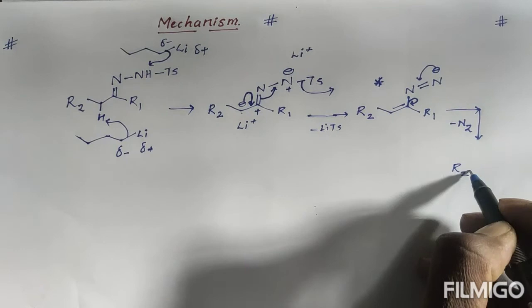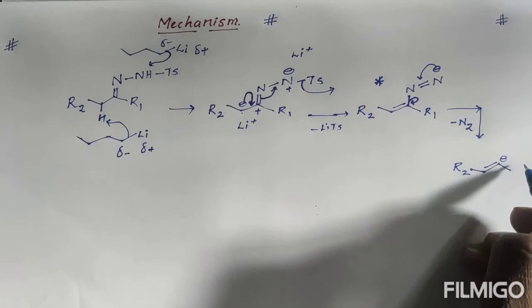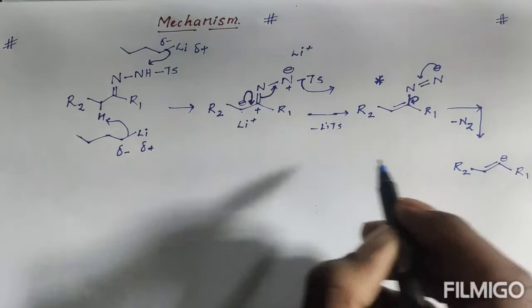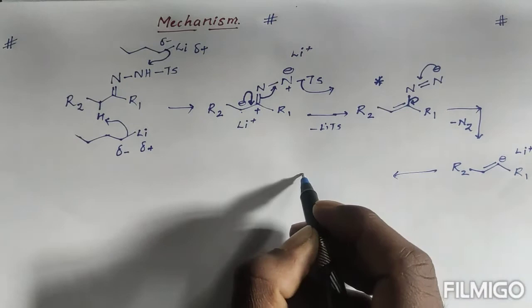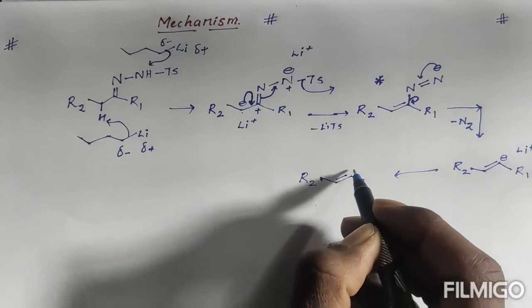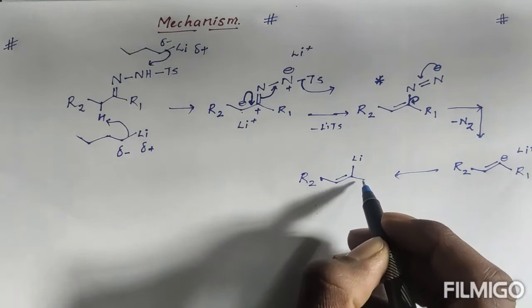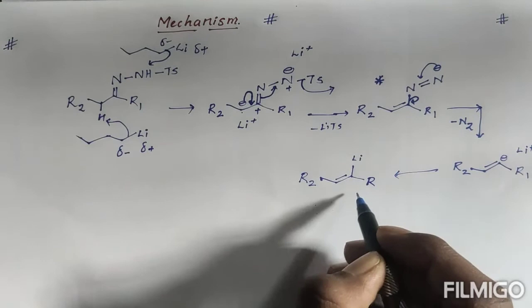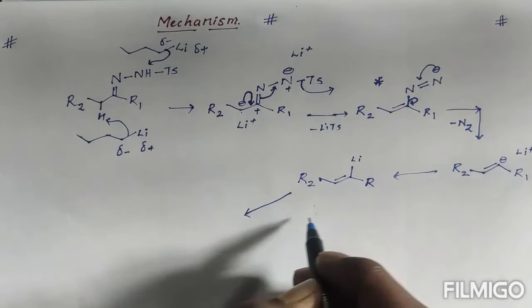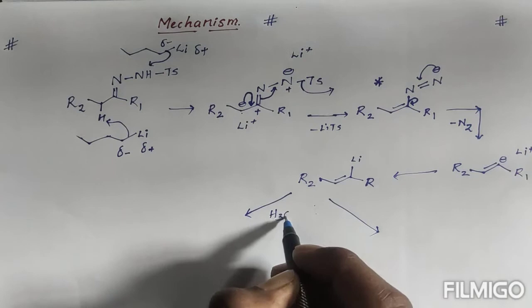So what we have here is a vinyl carbanion with R1, R2, and a negative charge on the terminal carbon. The second equivalent of lithium comes in. Lithium bonds between carbon and lithium, forming a vinyllithium species. This intermediate can then react in two different ways to give different products.